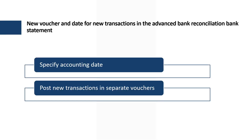The third feature is New Voucher and Date for New Transactions in the Advanced Bank Reconciliation bank statement, released in version 10.0.31. It provides two enhancements: the ability to specify the accounting date of new transactions either by the imported date of the bank statement or the booking date, as well as the ability to manually set it. Previously the accounting date was always the import date. The second enhancement changes how generated vouchers are posted — previously it was one consolidated voucher; now each new transaction is posted in a separate voucher.